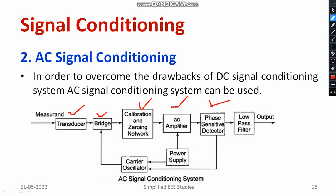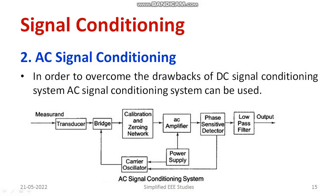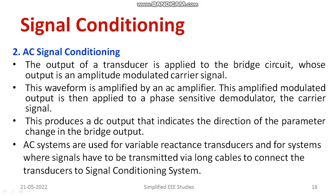A phase sensitive detector is also needed, along with a low-pass filter. To power the AC amplifier and carrier oscillator, a power supply unit is required. There is also a feedback path from the phase sensitive detector back to the bridge. In order to overcome the setbacks of DC signal conditioning devices, we use AC signal conditioning devices — though the network is more complex compared to DC, the slower response problem can be mitigated.